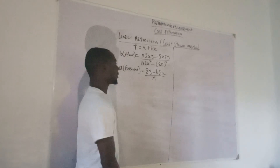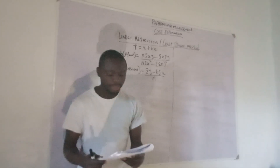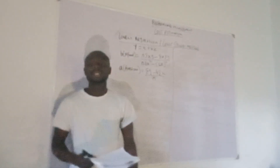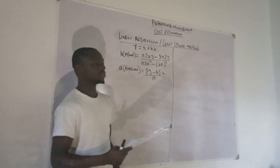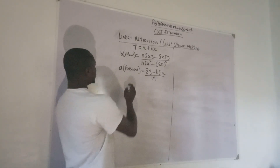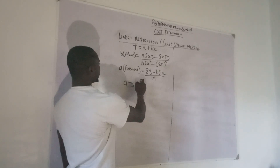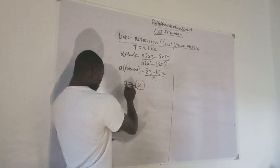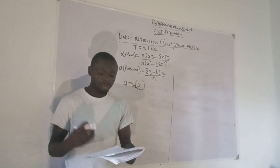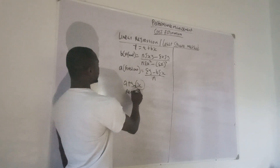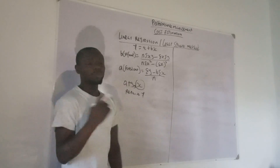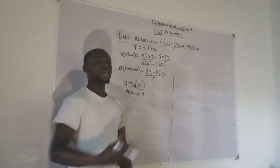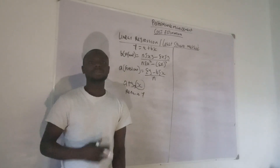I have a question here with data for months 1 through 6. The quantity produced will represent your x, which is your level of activity. The repair cost from this question will represent your y, because it's a cost. Your level of activity or output will always represent your x, and your cost will always represent your y.